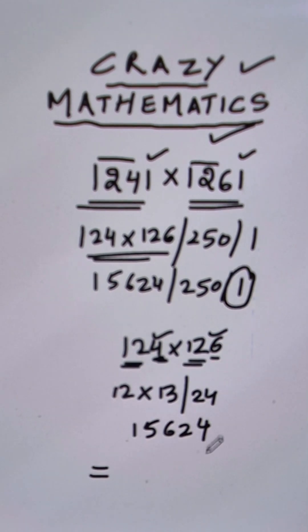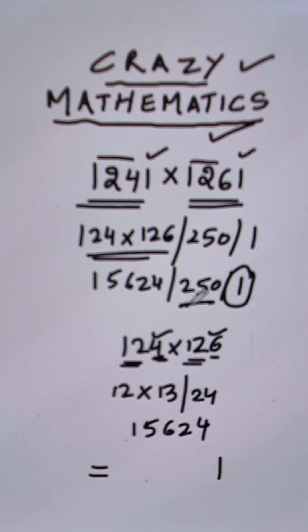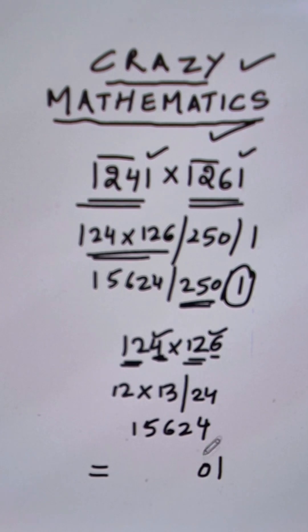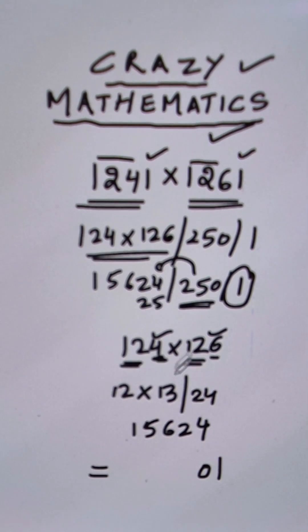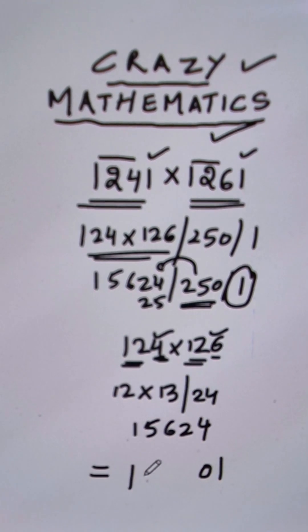Which is this 1, and then 250 means you will have a 0, and this 25 will get carried forward here. So if you add 25 here, you get 15649.